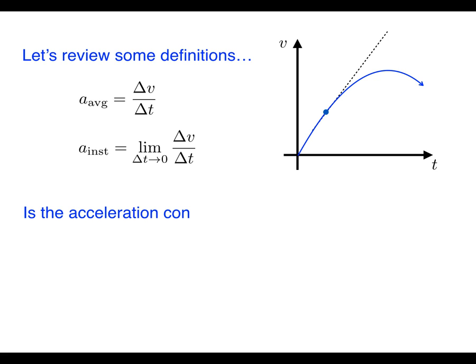Here's a new question. Do you think the acceleration is constant in this example? Let's just look at one other point on the curve and draw the tangent line there. As you can see the slopes of the two dashed lines are not the same so the answer to this question is no.